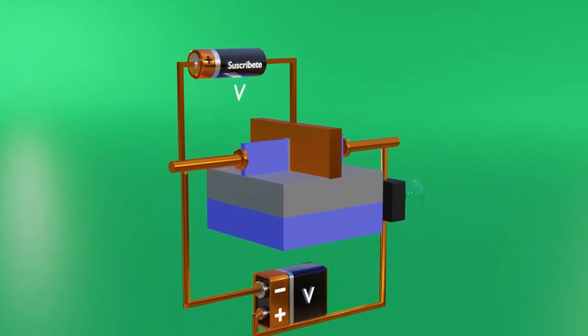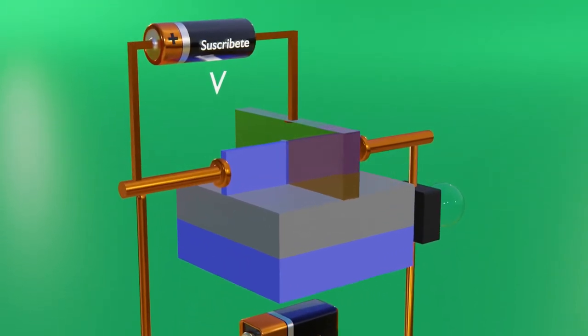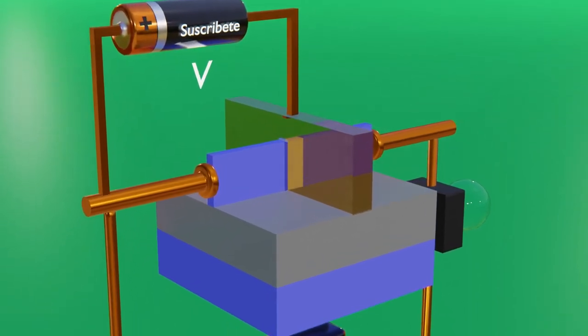In other words, we will have the ability to make the fin covered by the gate become the depletion region, completely preventing the passage of current.